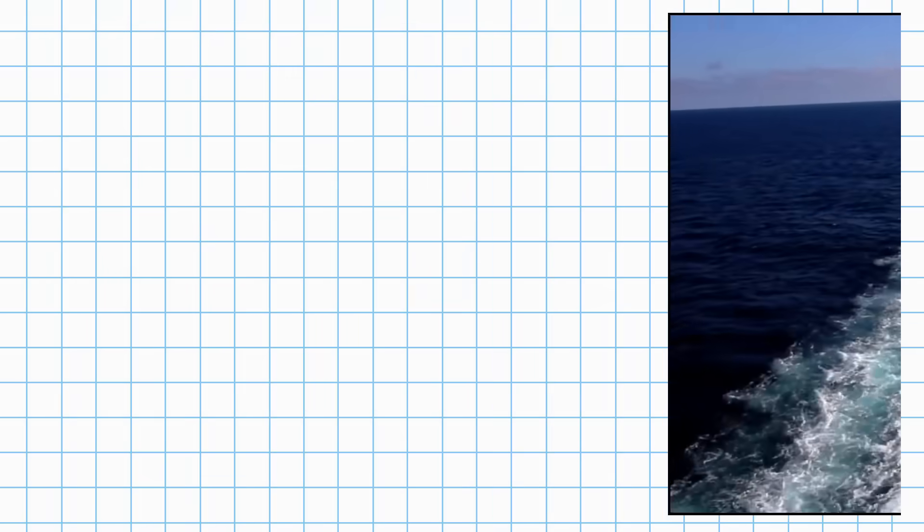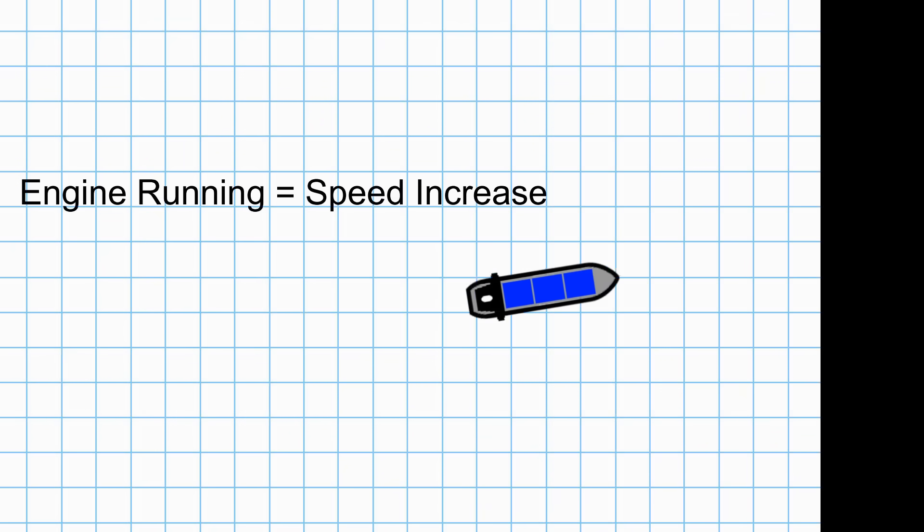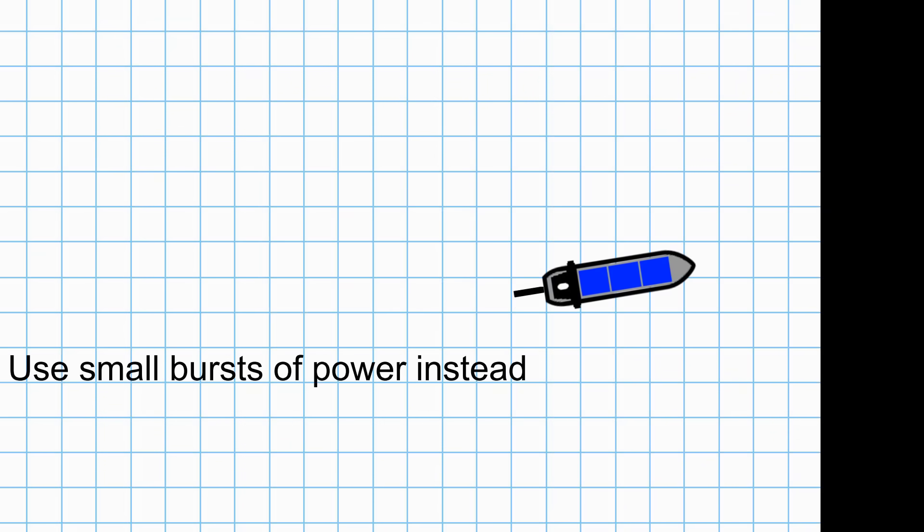If you're trying to maneuver at slow speeds, you don't want to have the engine running all the time—you're only going to pick up speed. You can use small bursts from the engine to generate the same effect. You move the rudder over, give a kick ahead, you're going to get the same turning effect while minimizing the build-up of speed.